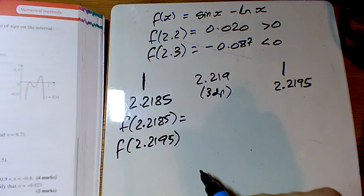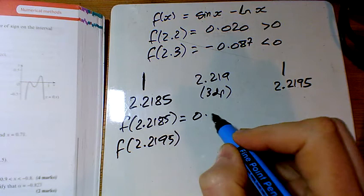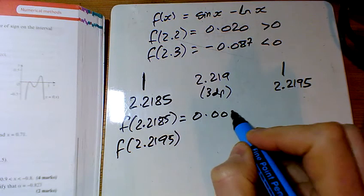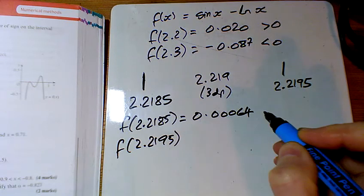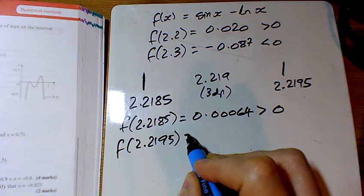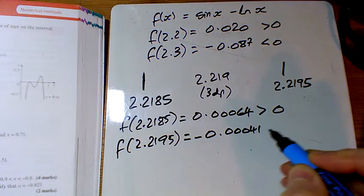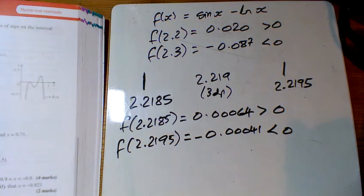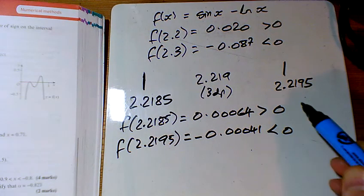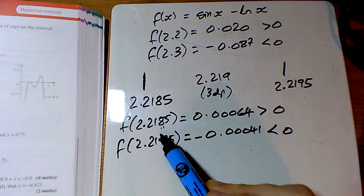2195. And one will be negative. Well, this one here, the other way around. This one is 0.00064, so that one's positive. And this one must be negative. Yes, minus 0.0041, less than 0. So there's a change in sign. Therefore, the interval's between these two.